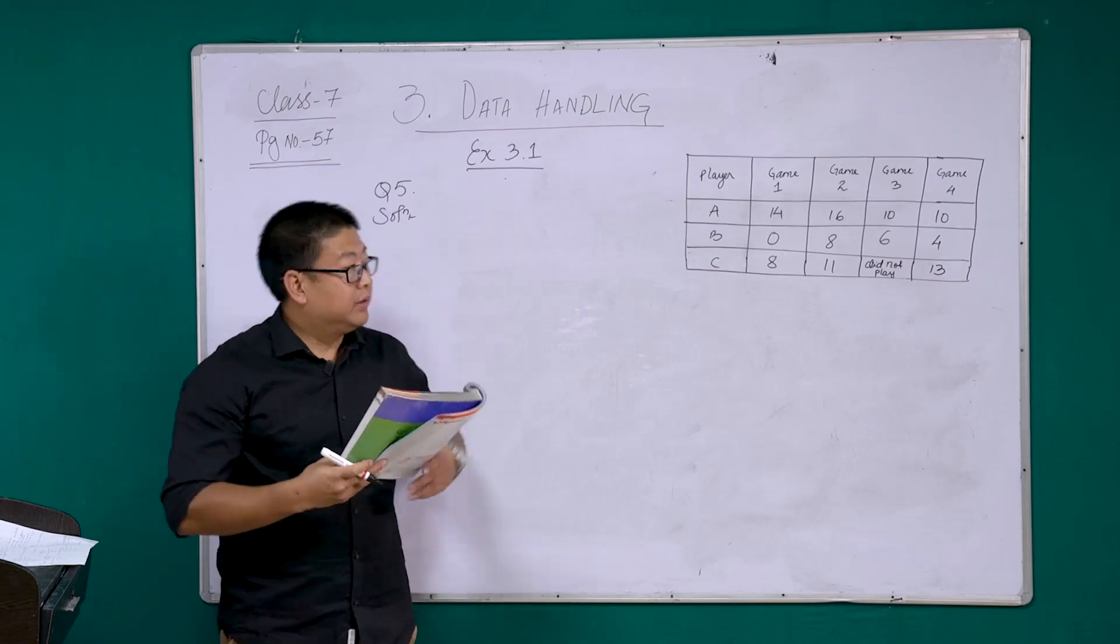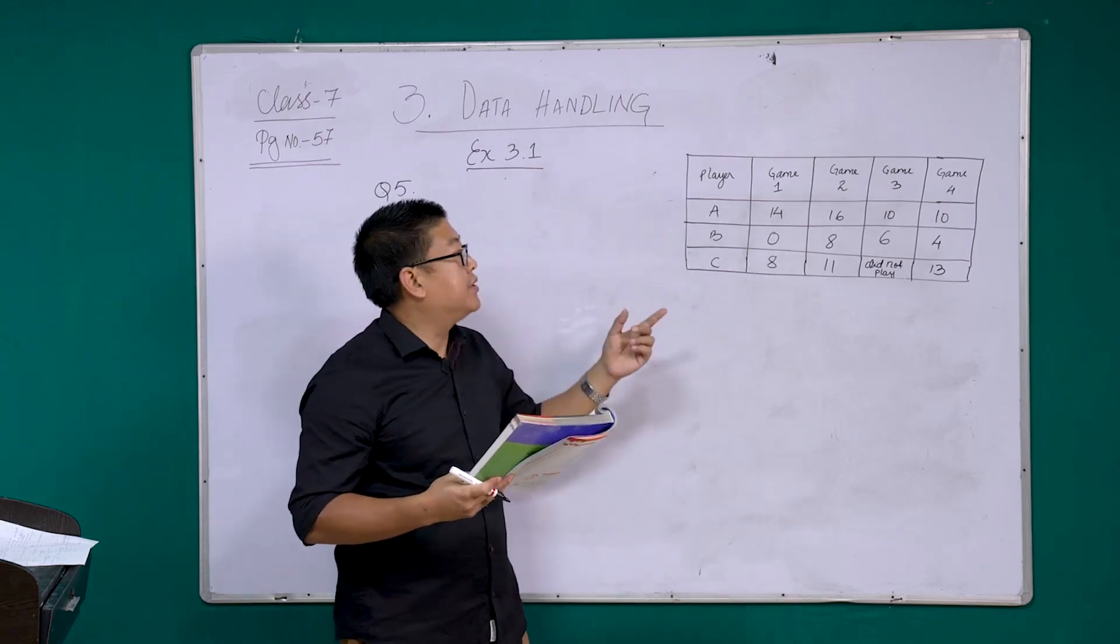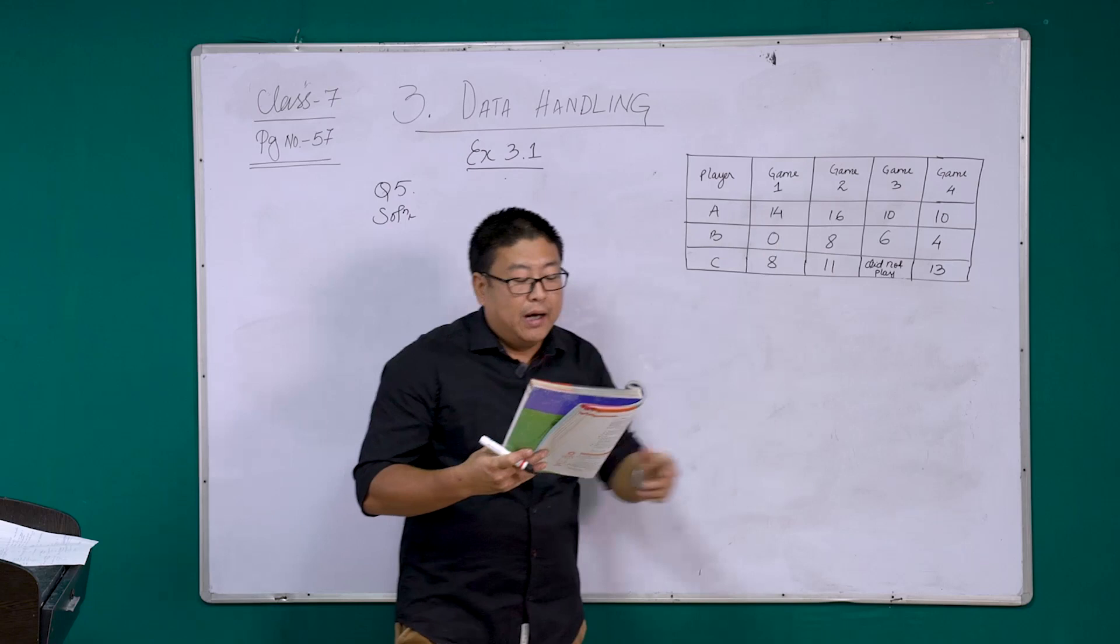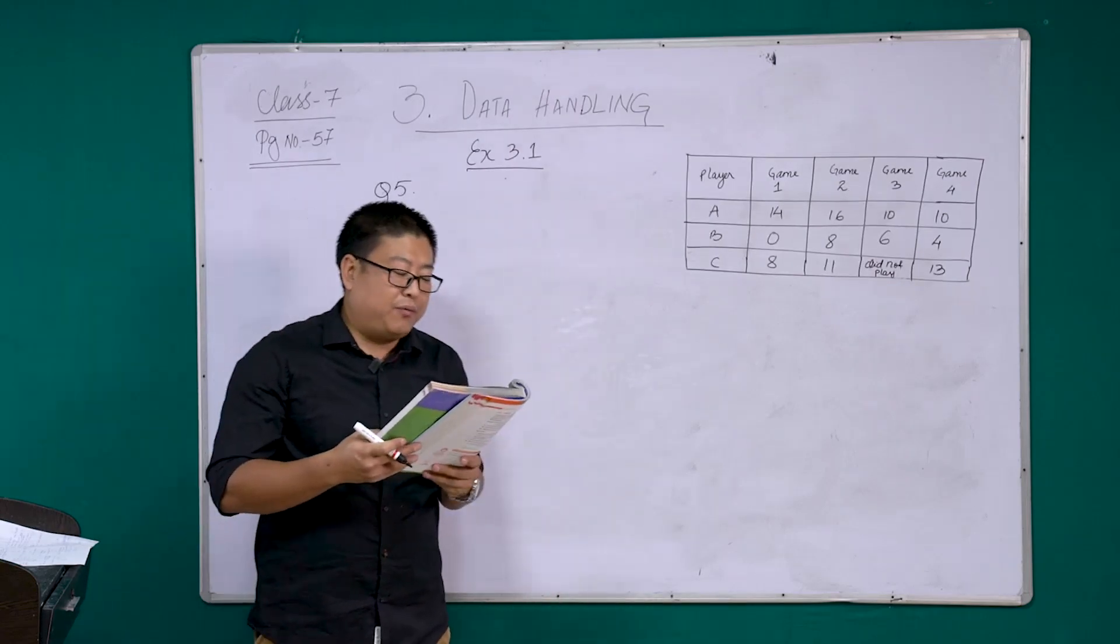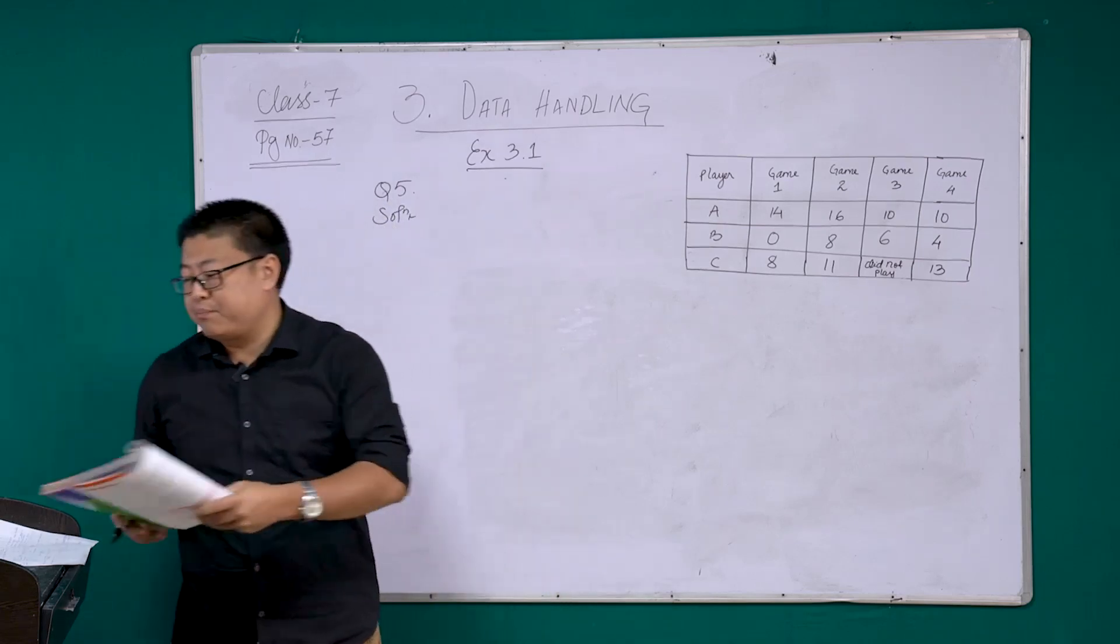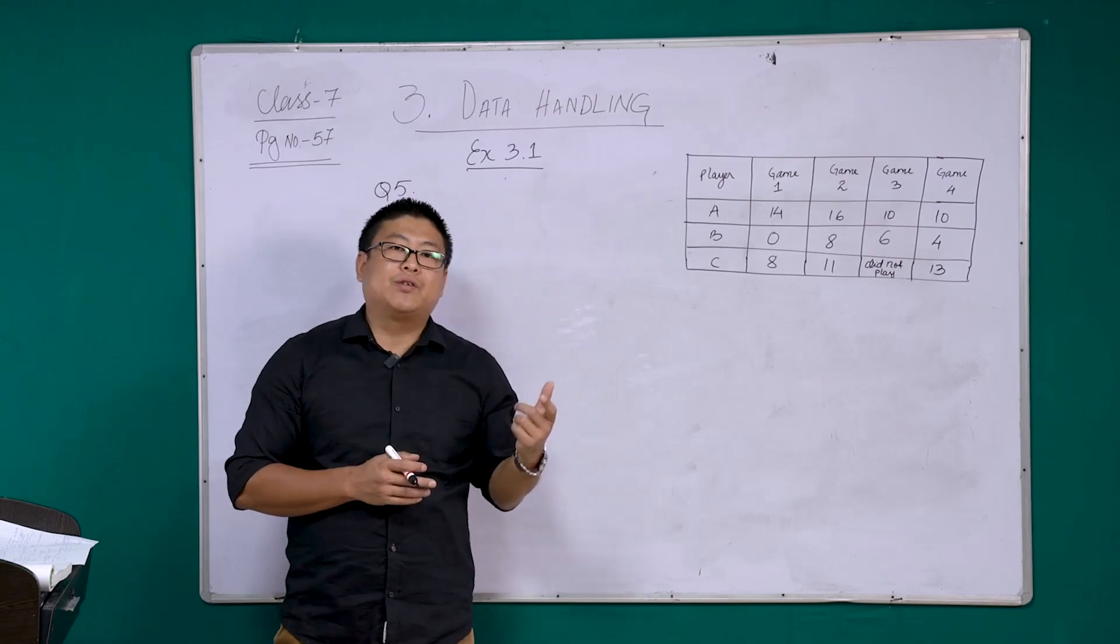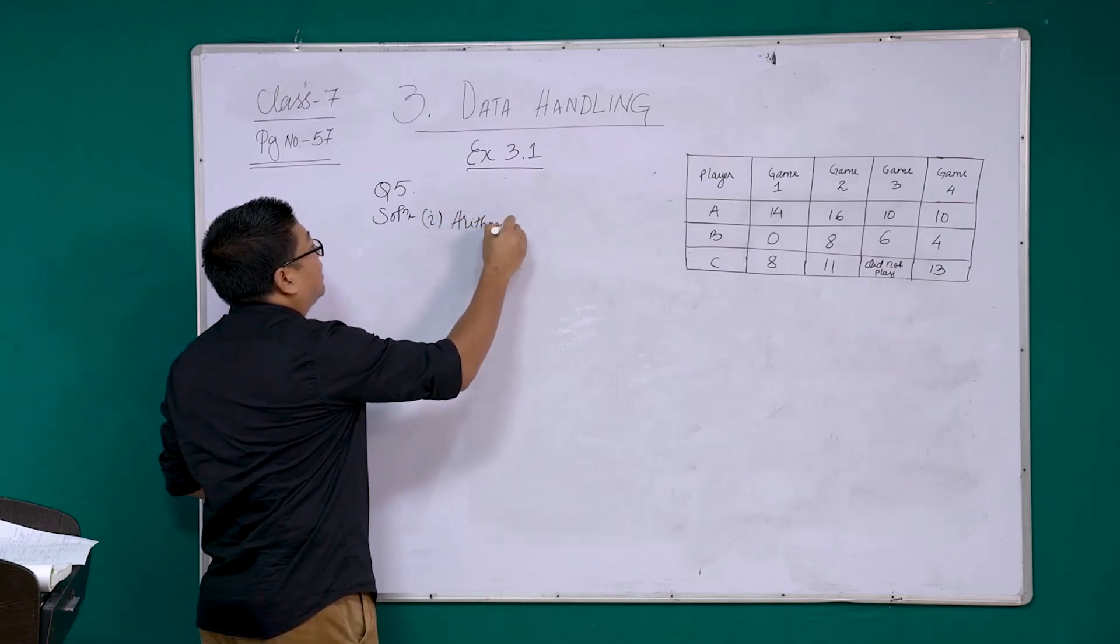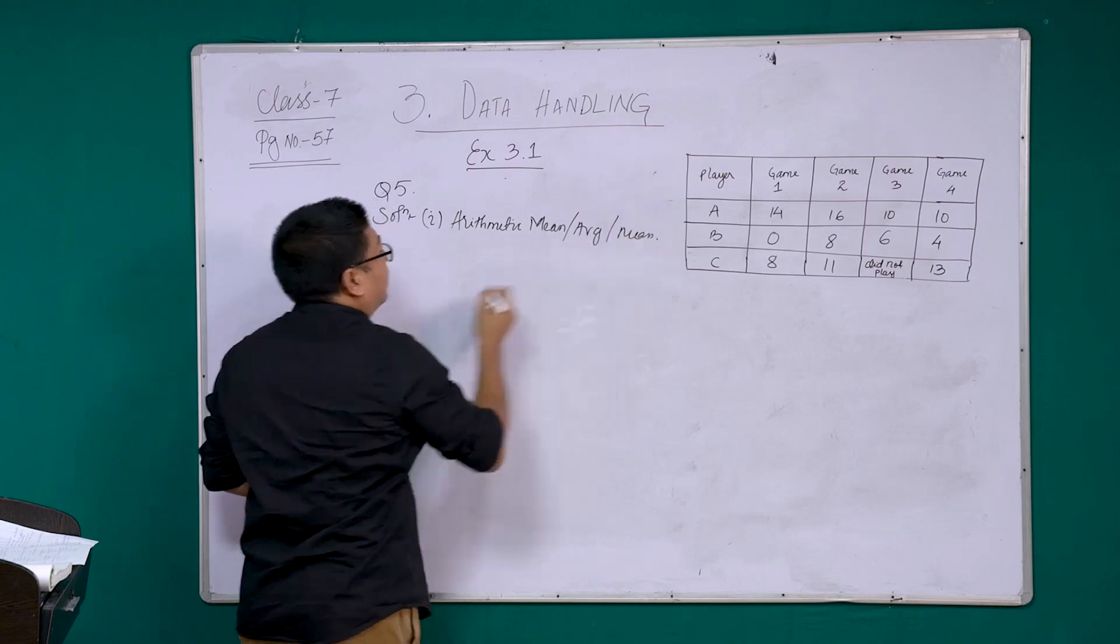Let's read the question together. The question reads: following table shows the points of each player scored in 4 games. That means each player has played 4 games and they have scored different scores. Now, looking at this table, we are going to answer a few questions below. The first one: find the mean to determine each average number of points scored per game. As already learned in the last class, average simply means arithmetic mean or simply mean.